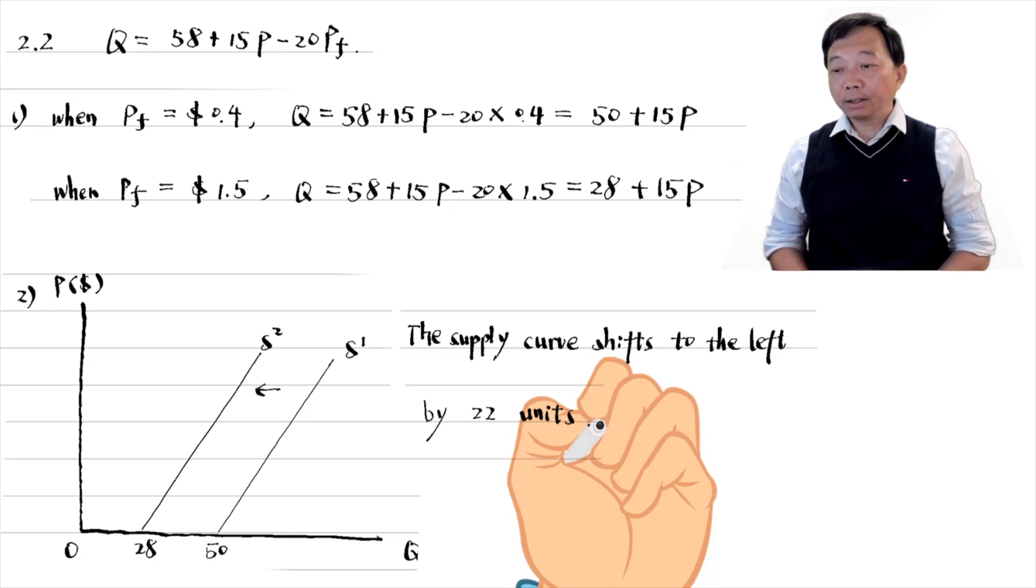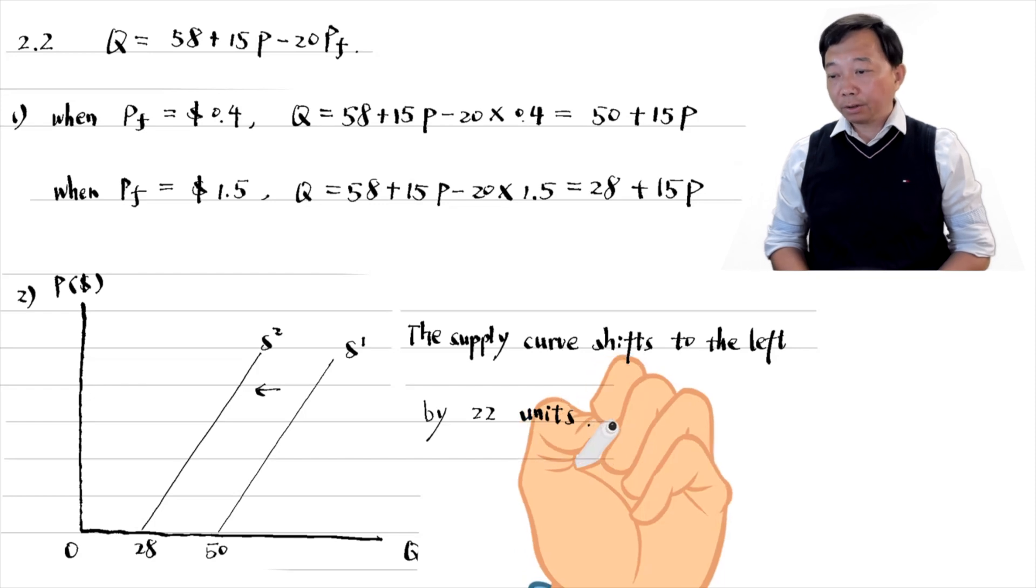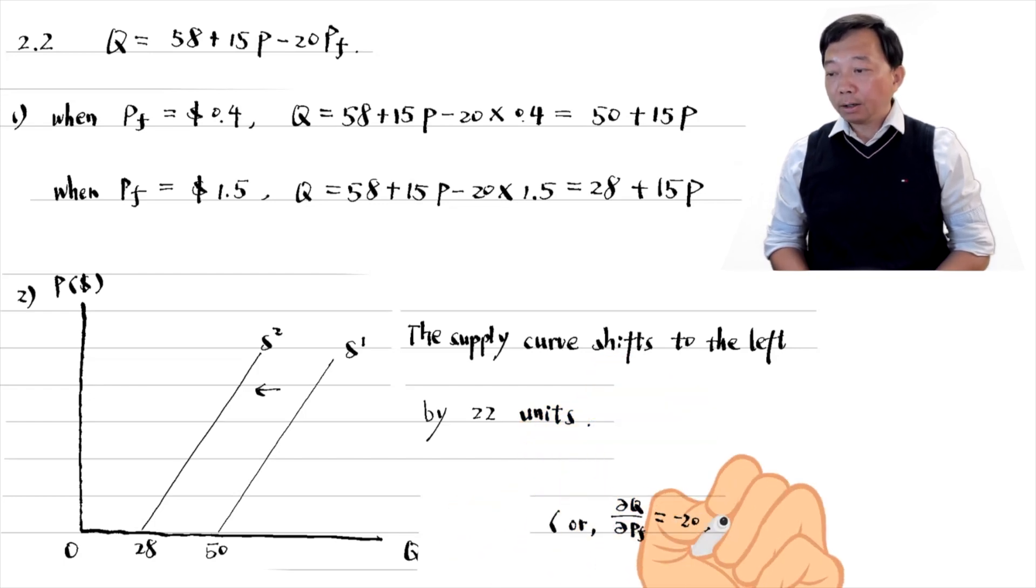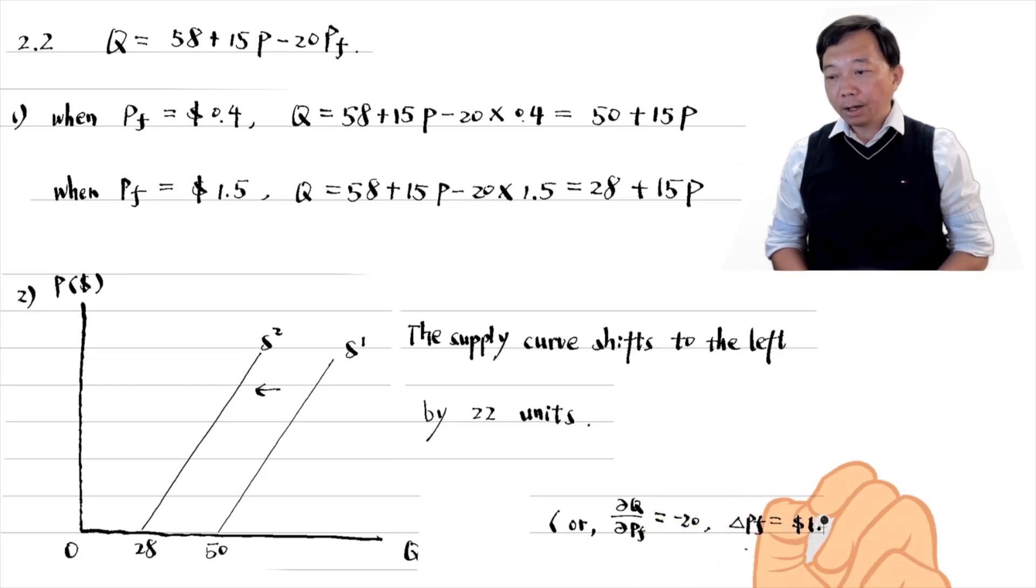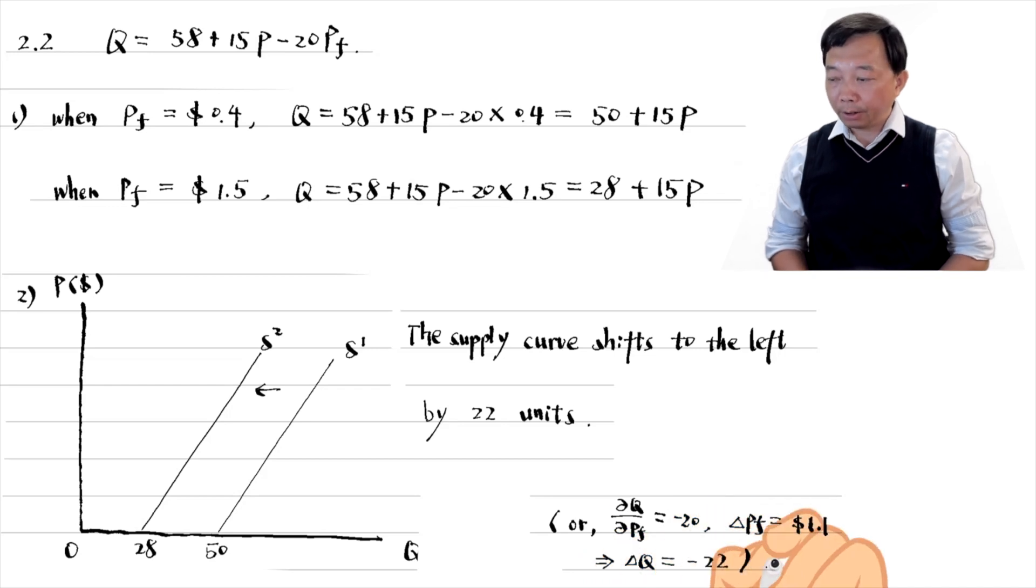To find the intersection points with the quantity x axis, we just need to set the price equal to zero in the supply functions. Or, we can do it this way. We differentiate the quantity supplied with respect to the price of fertilizer. It is minus 20. Thus, an increase of 1.1 dollars in the fertilizer price results in a decrease of 22 units in the supply.